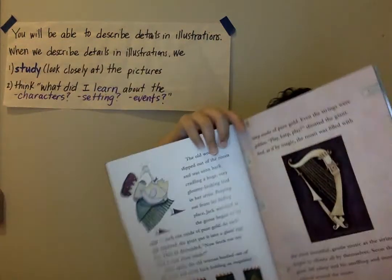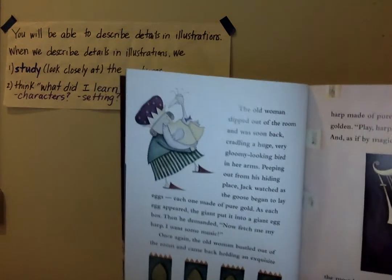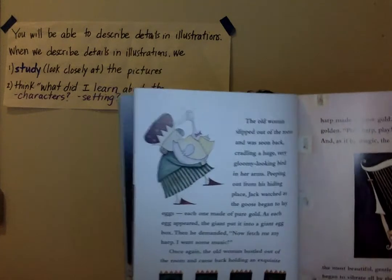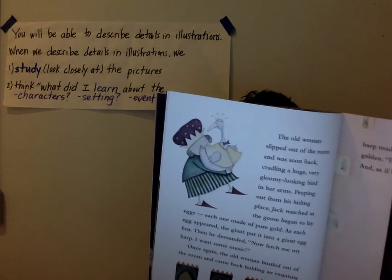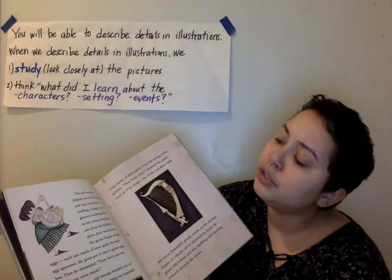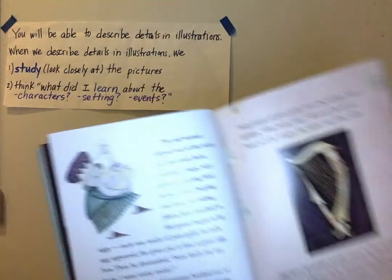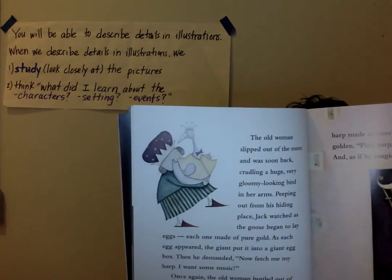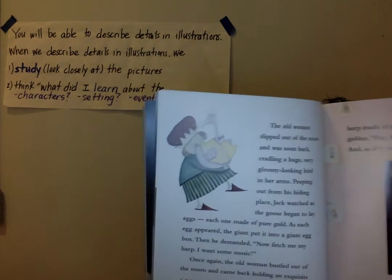Now, do you notice anything about some of the characters on this page? Yeah — there's a goose, and the goose is wearing clothes. It looks like he's wearing a vest and a bow tie.